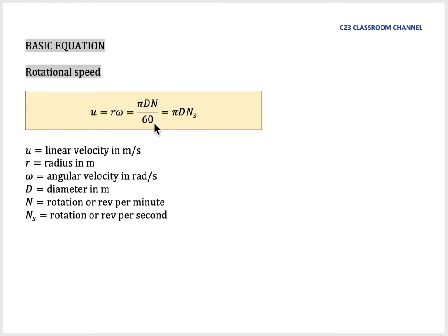We need to divide with 60 here because we must maintain the unit as meter per second. If the question gives you rotation per second, the terms here will become pi DN_s because the 60 here is used to convert from minutes to second. If the rotational speed is already given in unit second, we could calculate the value of U by pi DN_s. Please be careful because normally in pump or turbine questions, it will give you rotational speed in RPM.